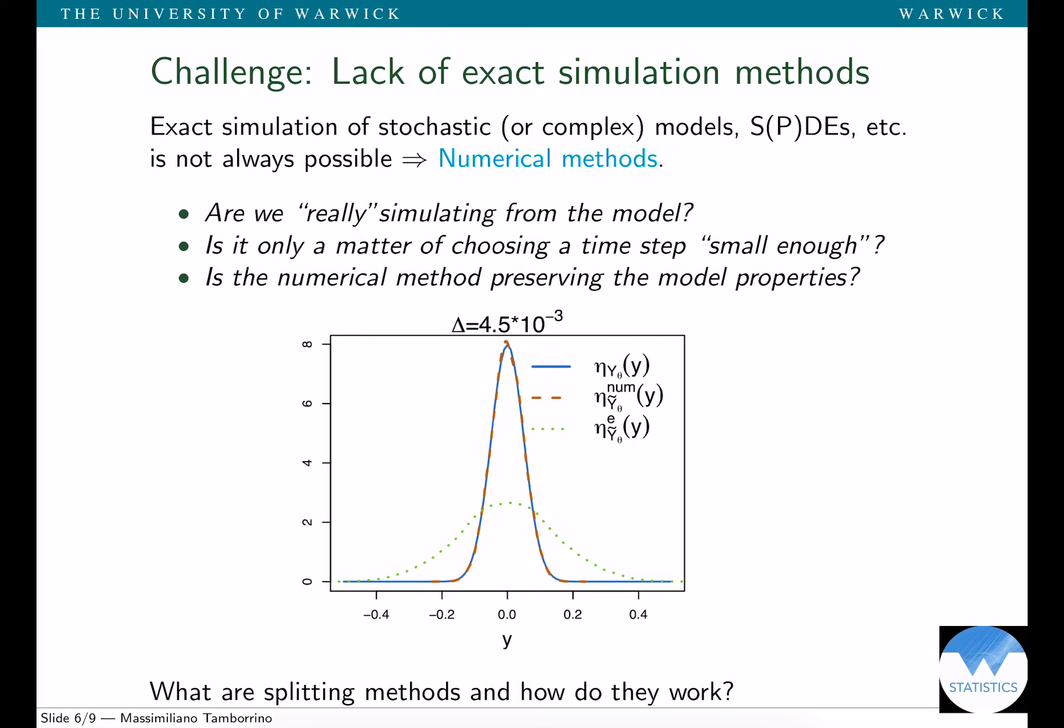What you see in this figure is the true invariant density from a certain SDE model, the blue curve. If we simulate data from a proper structure-preserving numerical method and estimate the invariant density, we get this dashed orange line. If we simulate the data from the Euler-Maruyama method and estimate the invariant density, we get the green line. This highlights the importance of having a numerical method that's able to preserve the key features of the model, in this case the invariant density.